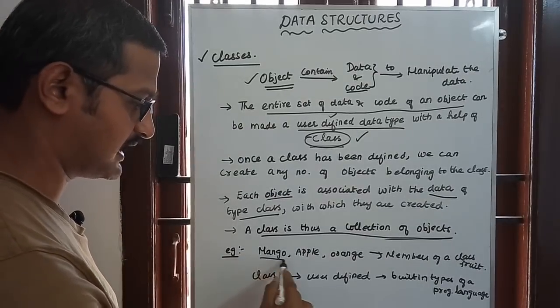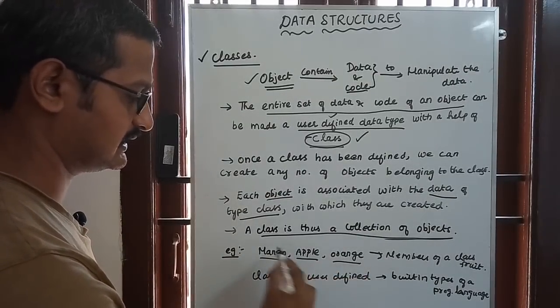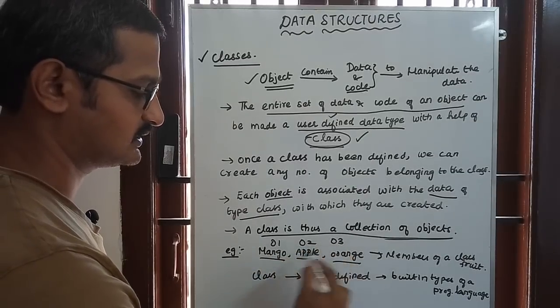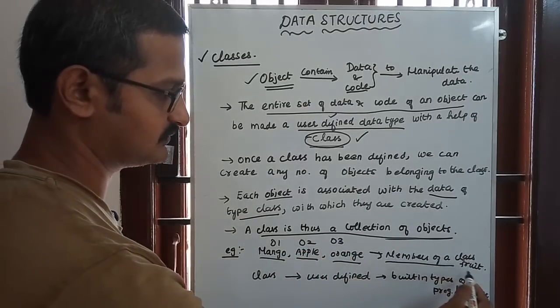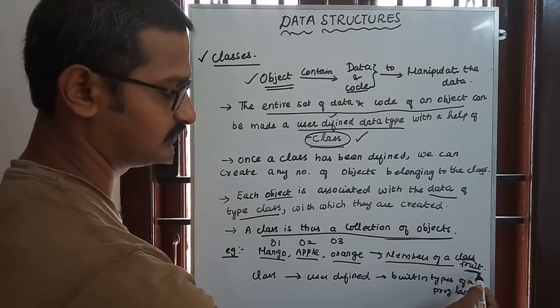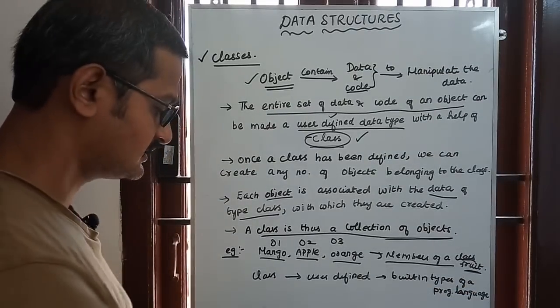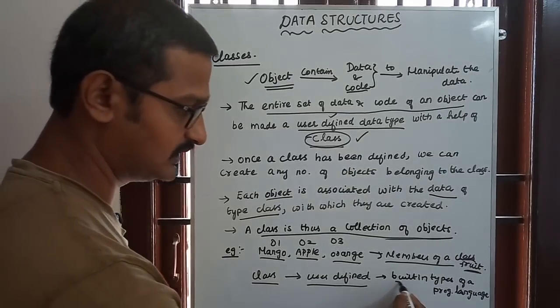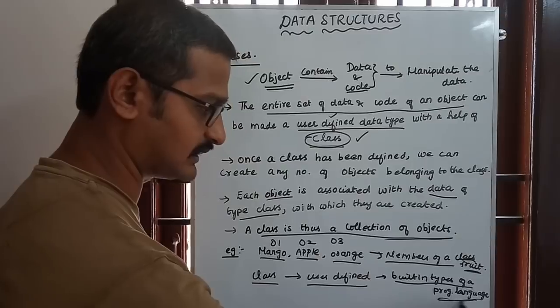For example, mango, apple, orange - these are object one, object two, object three. They all combine as members of the class fruit. A class is a user-defined building type of a programming language.